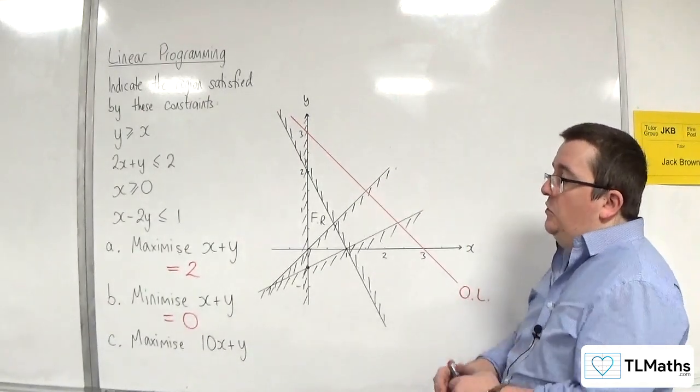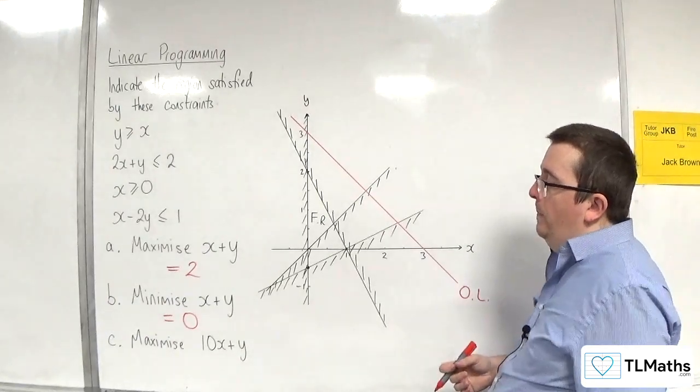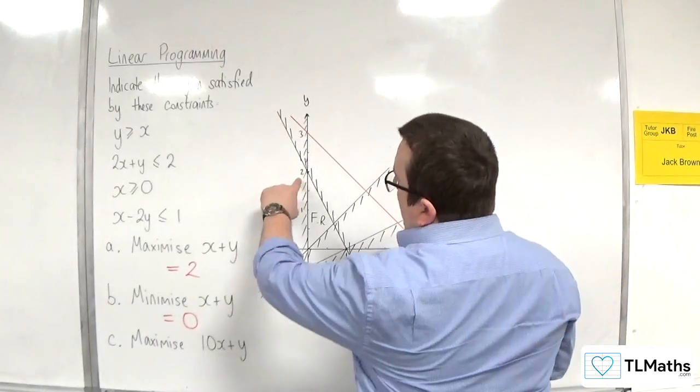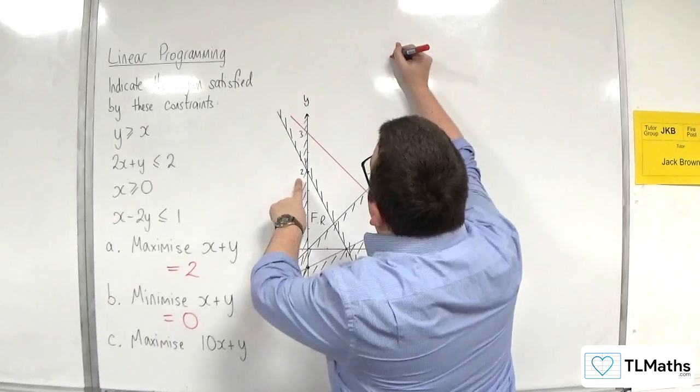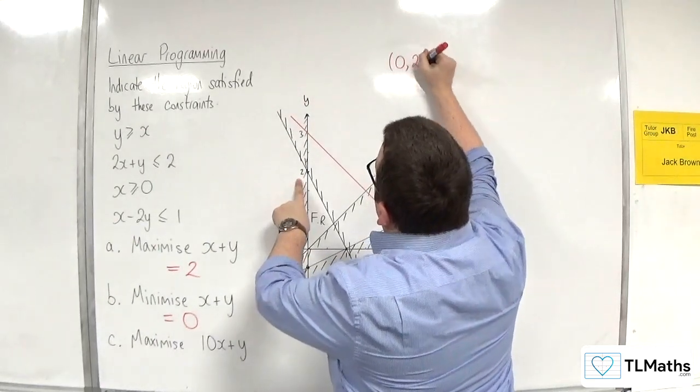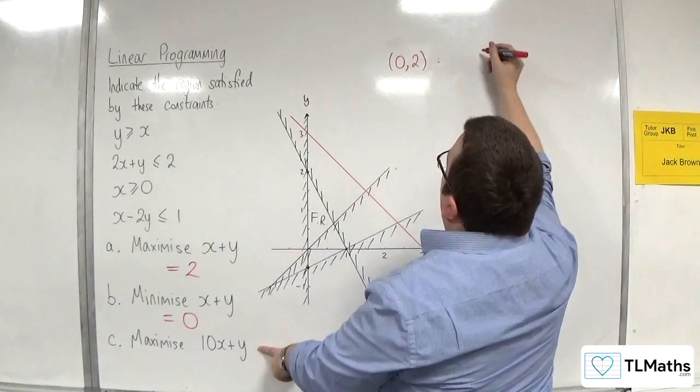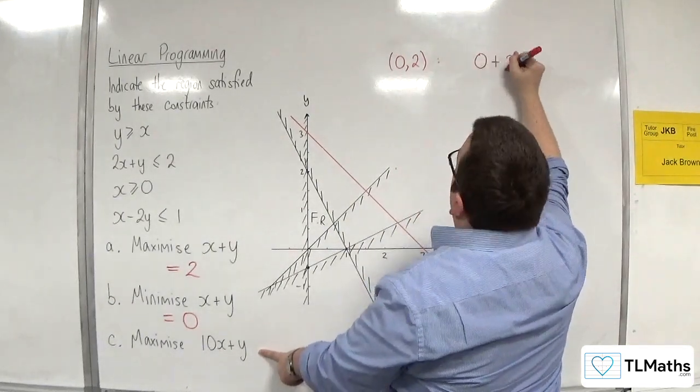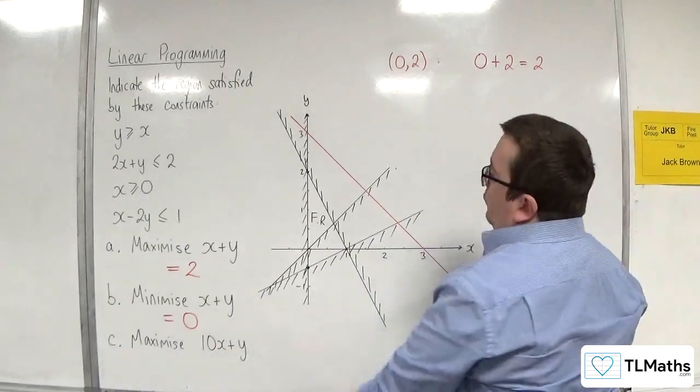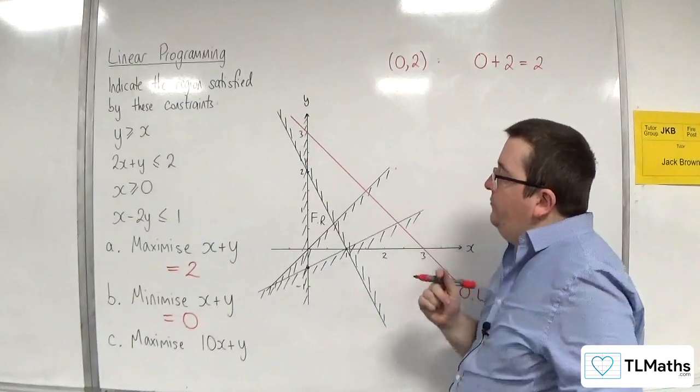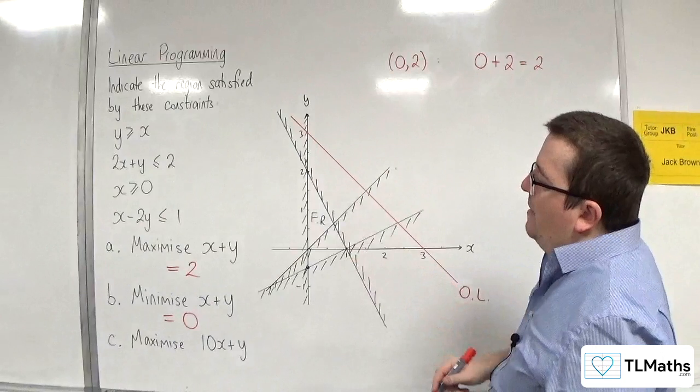So, if I test this point, that corner is at 0, 2. So, maximizing 10X plus Y, I get 10 lots of 0 plus 2. So, the maximum might be 2. I need to find that point now.